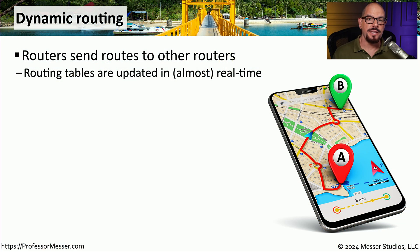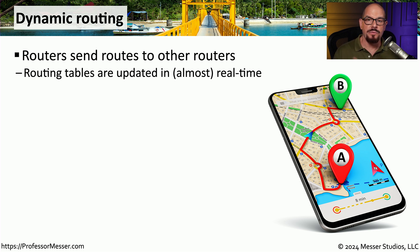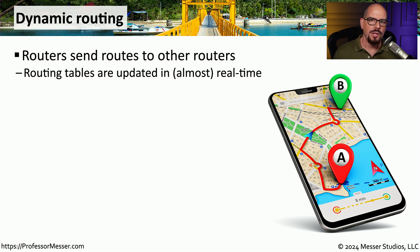Static routing requires the network administrator to manually configure every route on every router in the organization. If you have three or four routers, that might not be a big problem. But if you have tens or even hundreds of routers, you might want a more automated way for configuring your routing tables. One way to do that is through the process of dynamic routing.